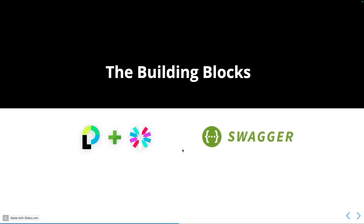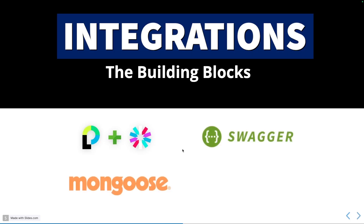NestJS has nice integration with external interfaces. For example, if you want to expose an API, there's NestJS Swagger. If you want to work with JWT tokens, there's NestJS Passport and NestJS JWT. For databases, there's NestJS Mongoose, NestJS TypeORM, NestJS Sequelize, and Prisma has its own interfaces that NestJS also supports.